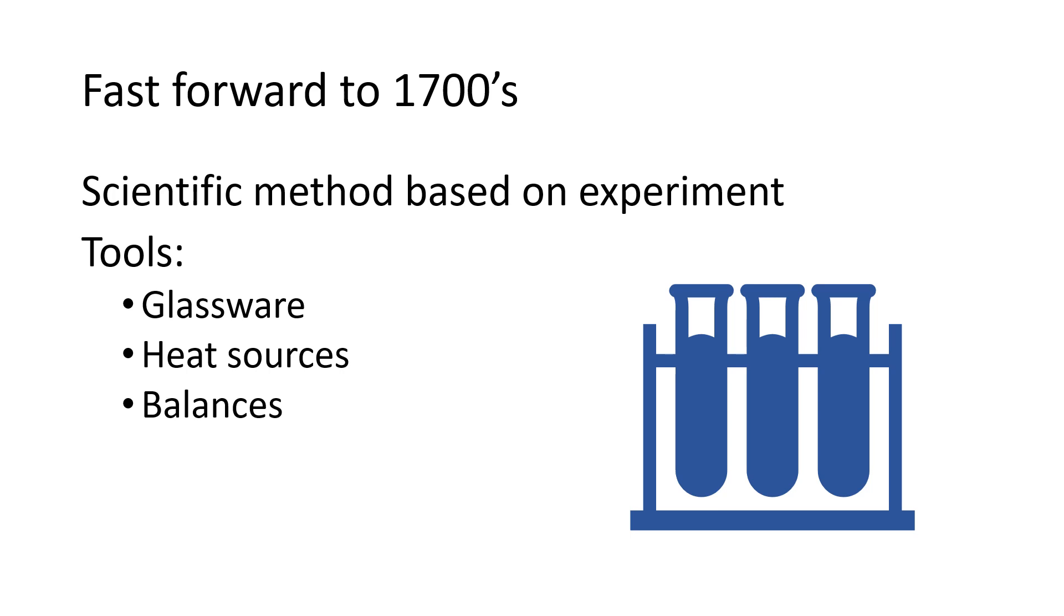We also had some of the basic tools of modern science. By this point in time, a lot of the glassware, things like beakers and watch glasses. We're starting to get reliable heat sources like burners and balances were available to get accurate mass measurements.